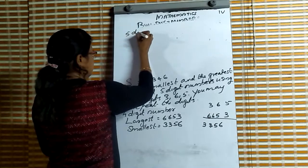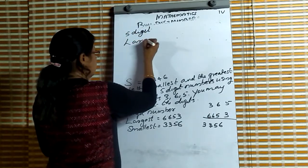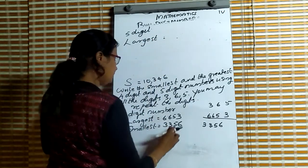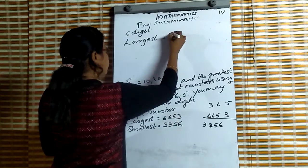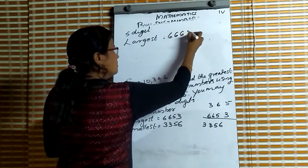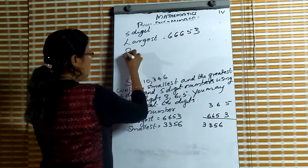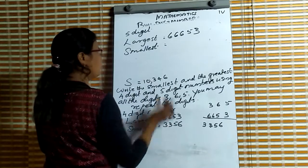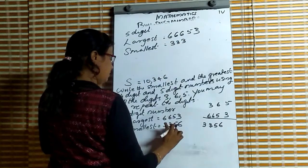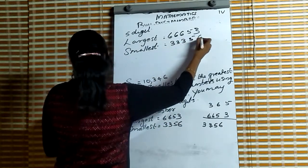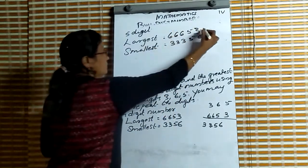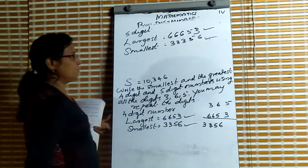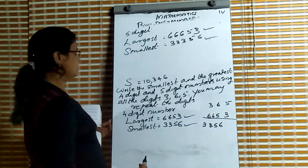For the 5-digit number: the largest 5-digit number using 3, 6, 5 with repetition is 66653. The smallest 5-digit number: the smallest digit is 3, repeated, giving 33356.